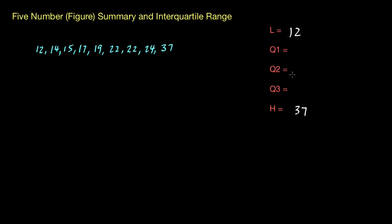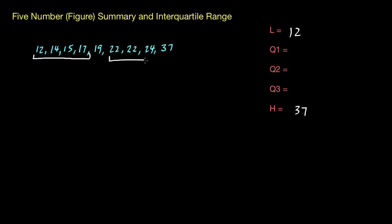Now Q2 — the median — is the next value to find. You need to count how many numbers we have: one, two, three, four, five, six, seven, eight, nine numbers. A little warning: don't halve nine and assume four and a half is the middle — that would put you between 17 and 19 which is not the halfway point. What you need to do is visualize what's happening: we've got four numbers on the left hand side and four numbers on the right, with one sitting right in the middle by itself. That is our Q2 value, so I'm going to put 19 here.